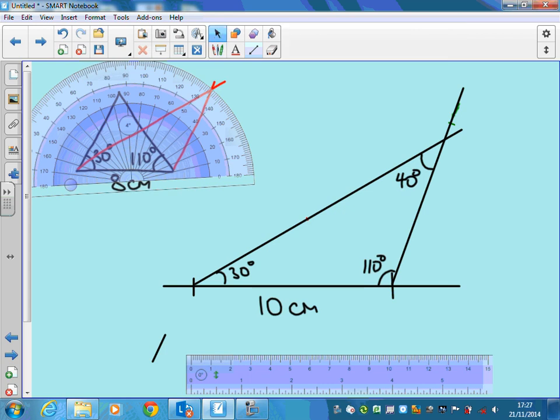That's how you can construct triangles when given one side and two angles. I'll make another video to talk about how you can do it when you're given more side measurements and fewer angles.